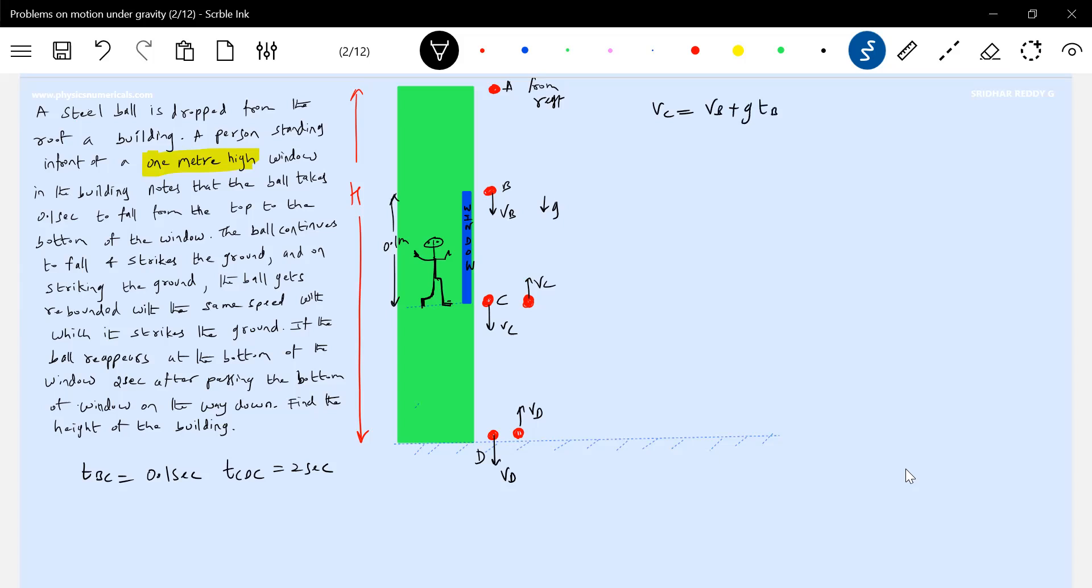At the window we can apply VC equal to VB plus g*TBC. What is VC? We don't know that, both are unknown. So VC equals VB plus 10 into 0.1, so VC equals VB plus one, call this equation one. Then we know height of the window, VC² - VB² = 2g into height. This may be very lengthy. Let me go for another formula.